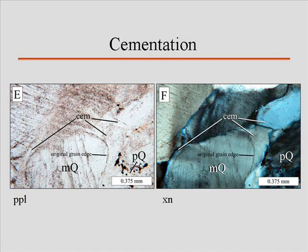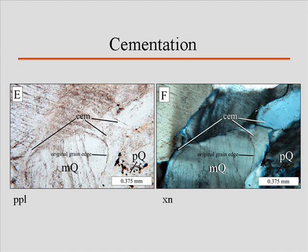The nice thing about quartz overgrowth cements is that because they are chemical precipitates on top of a quartz grain, they tend to carry on the optical characteristics of the grain. If that's the optic axis of a quartz grain here, that's the optic axis of that grain there. When cements start to form over the top of those grains, the cement that forms is in optical continuity with the grain it is precipitating on.